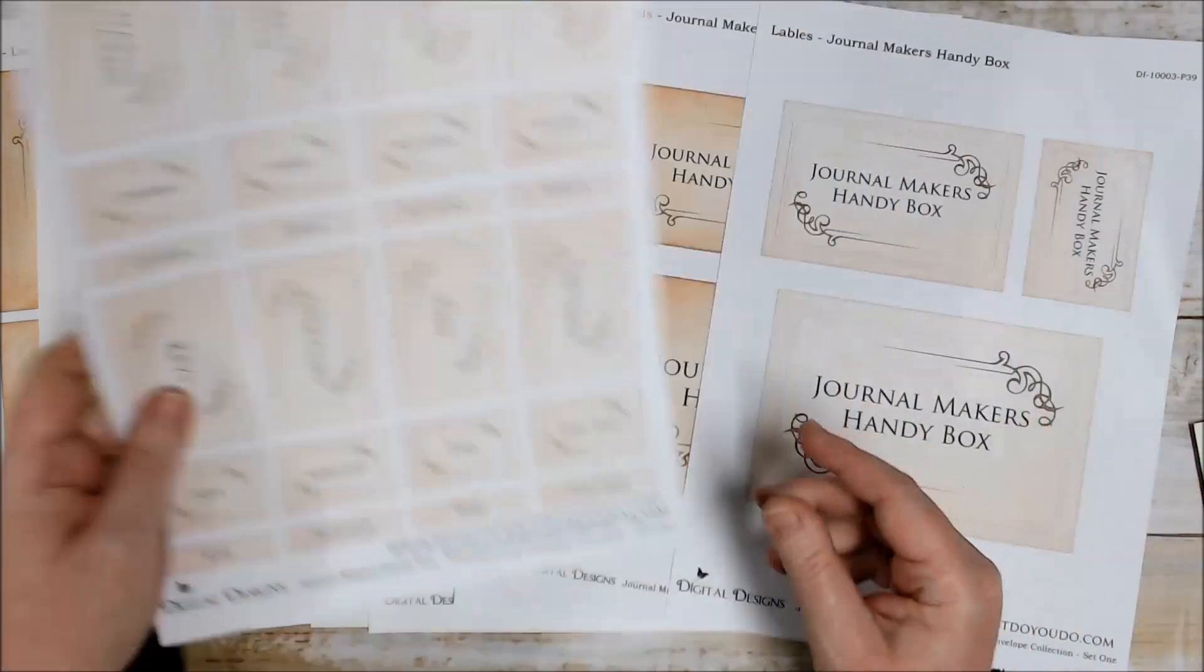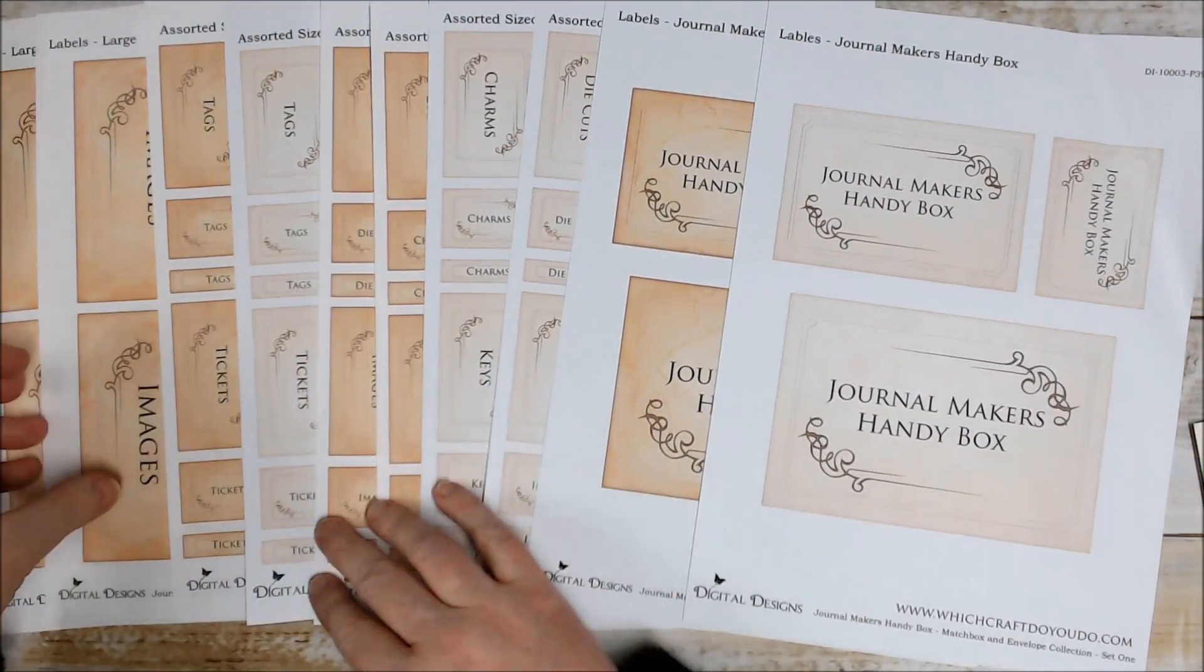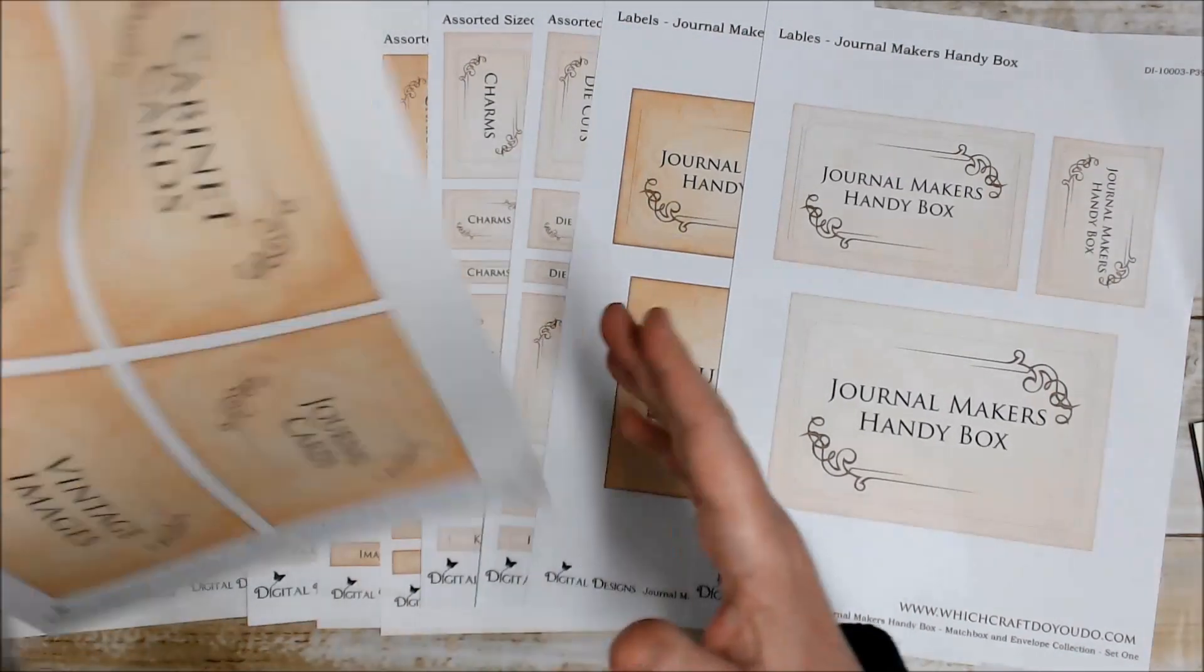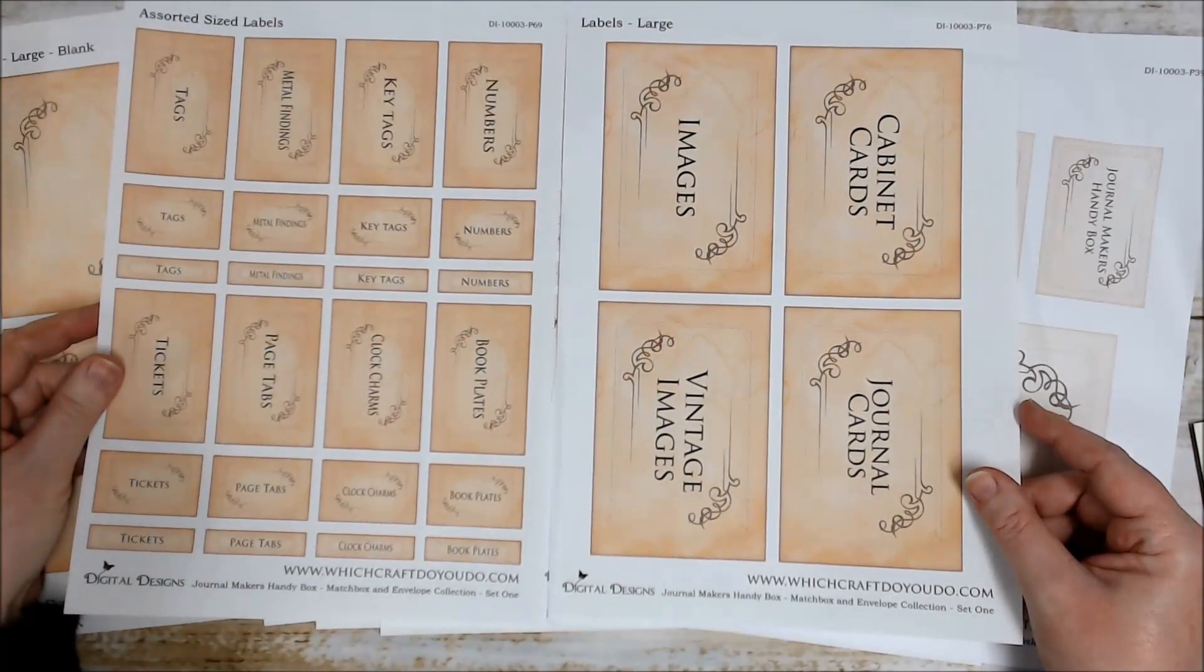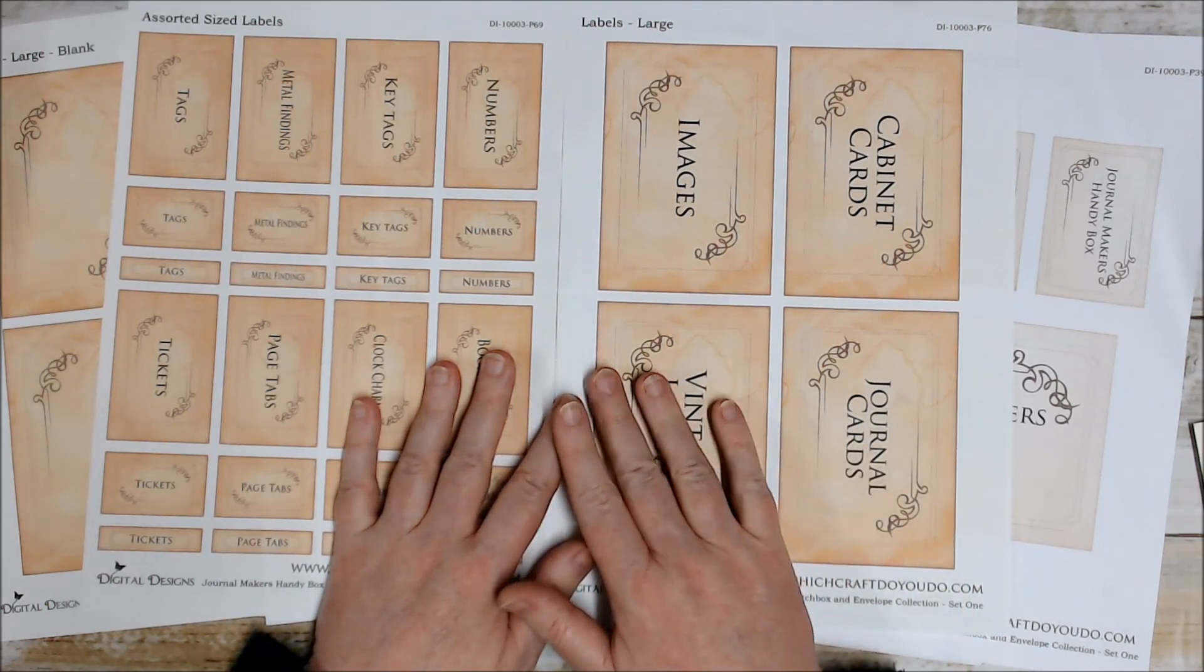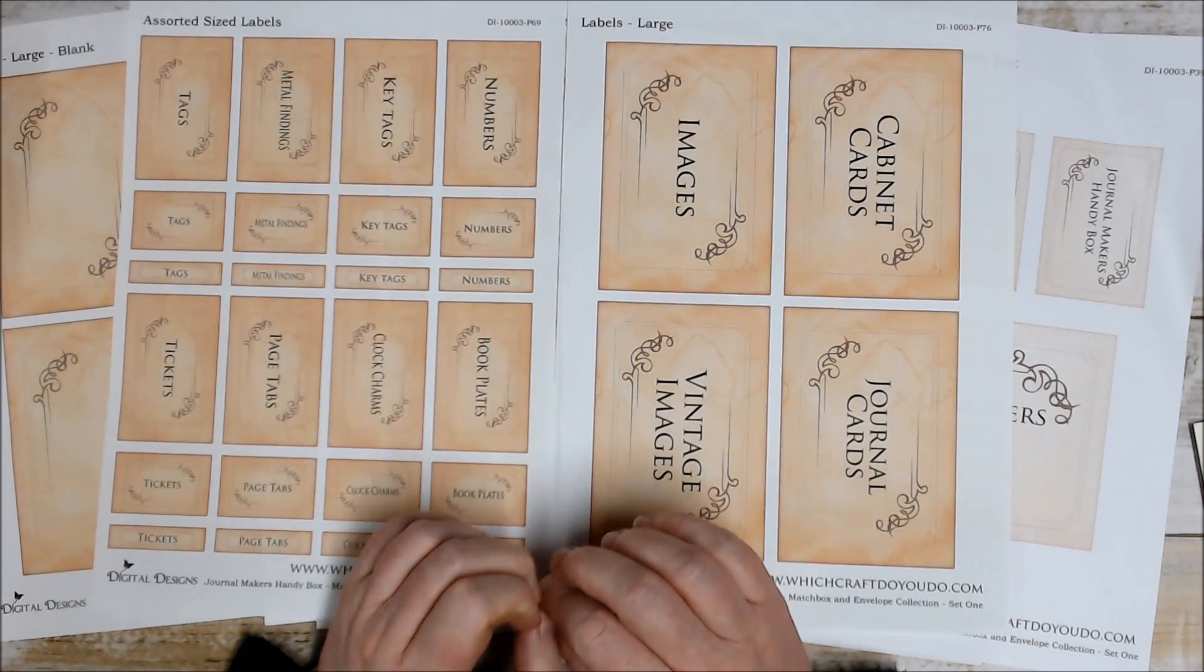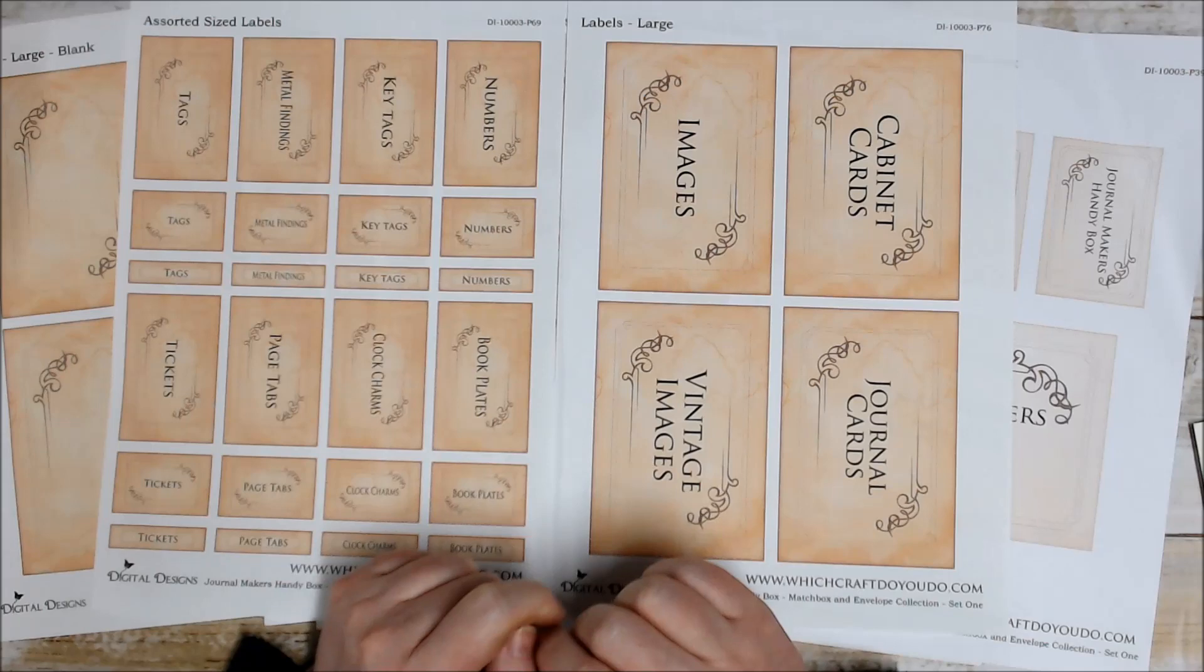In the kit you get various sized labels - large labels like these ones and then smaller labels like this. All of the information regarding the words on each of the labels, envelopes, and matchboxes will be detailed in the listing. You can find a link to the listing in my shop in the description box below.